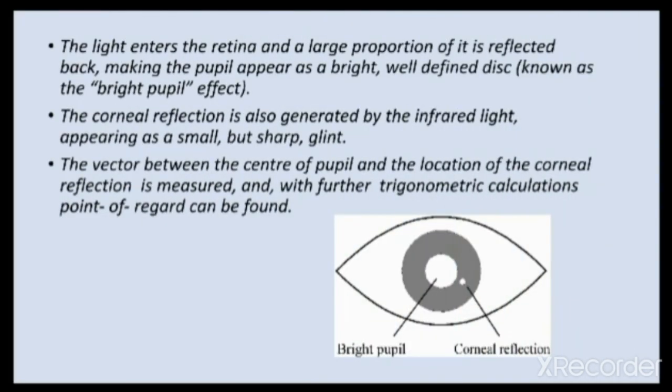The light enters the retina and a large proportion of it is reflected back, making the pupil appear as a bright, well-defined disc — known as the bright pupil effect. The corneal reflection is also generated by the infrared light, appearing as a small but sharp glint. The vector between the center of the pupil and the location of the corneal reflection is measured and, with further trigonometric calculations, point of regard can be found.